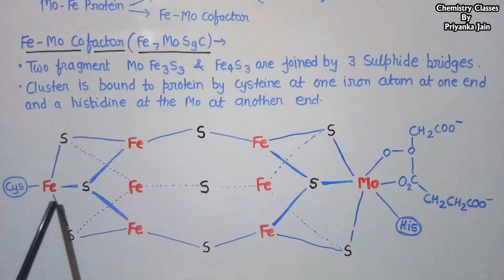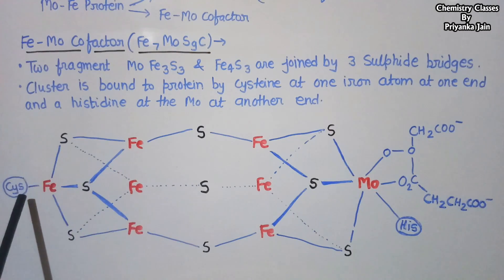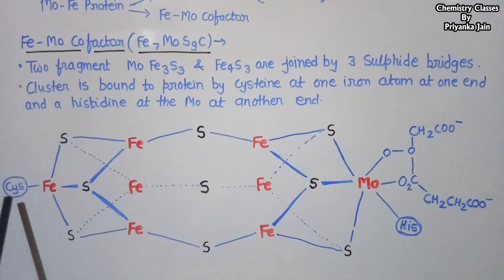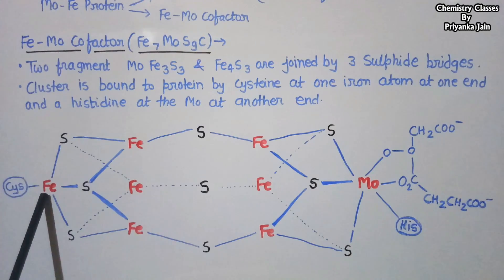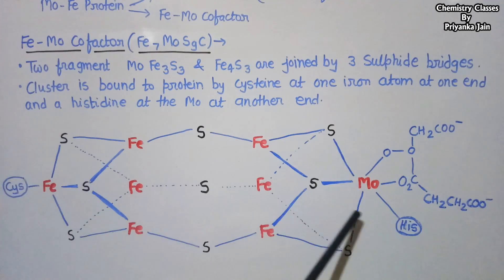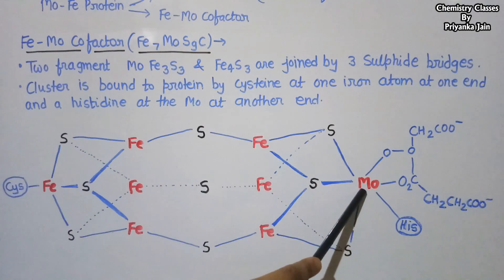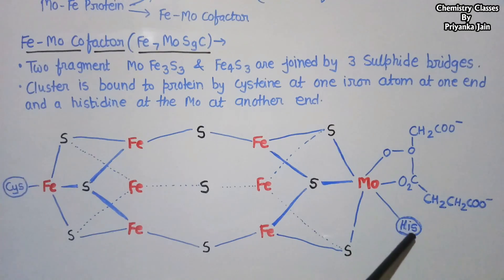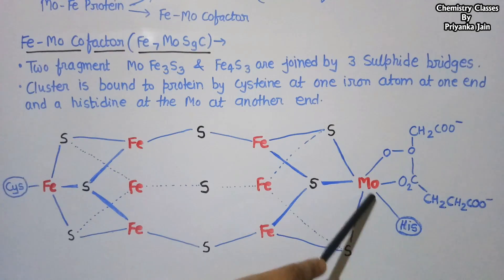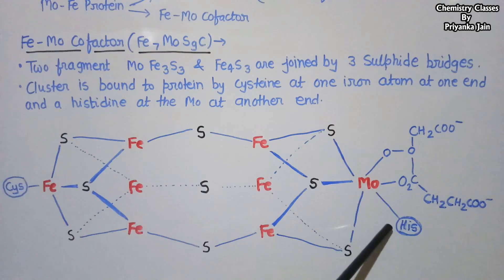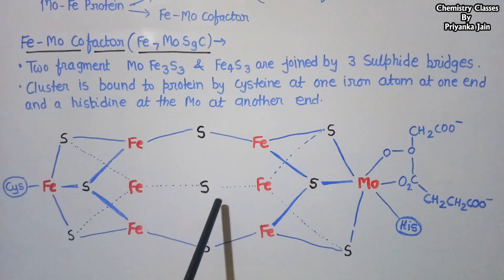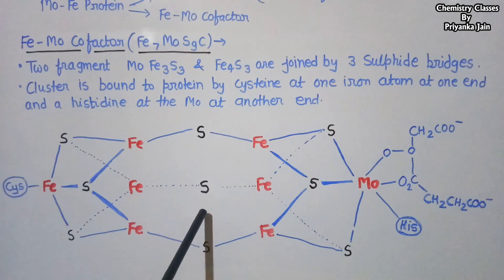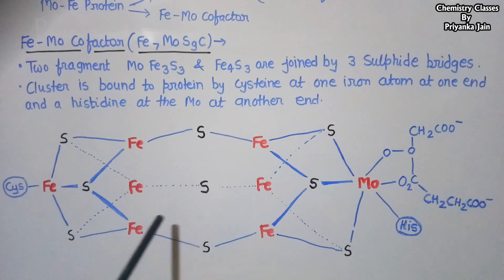This side of the cofactor is joined to the protein by cysteine at the iron atom, and the other end is joined to histidine on the molybdenum side. This is the complete structure of the iron-molybdenum cofactor.